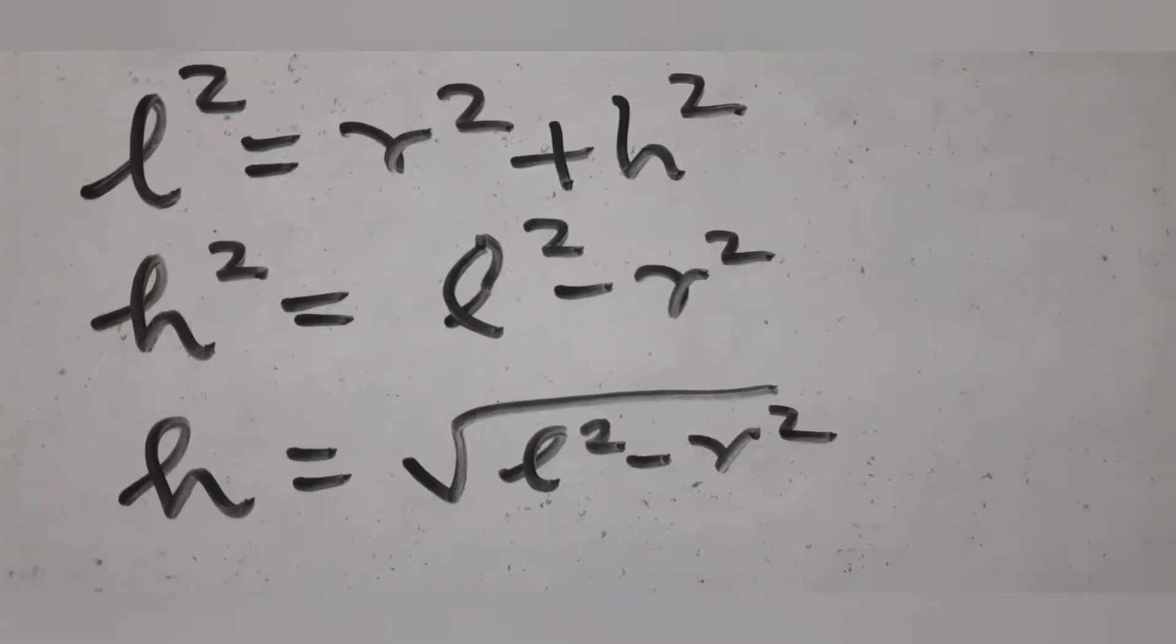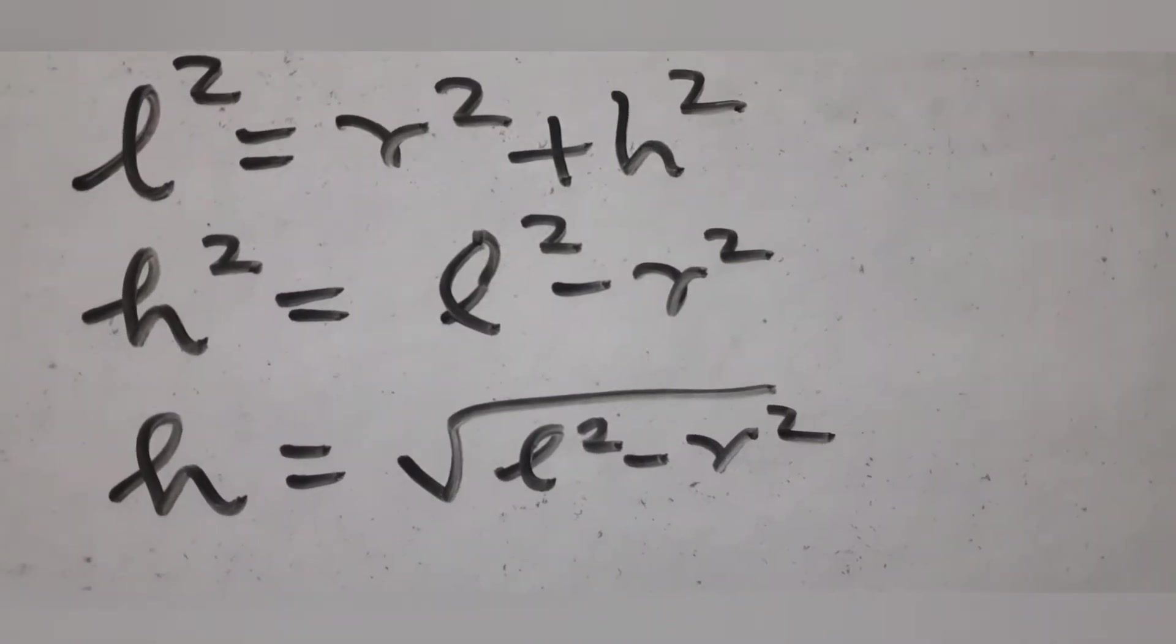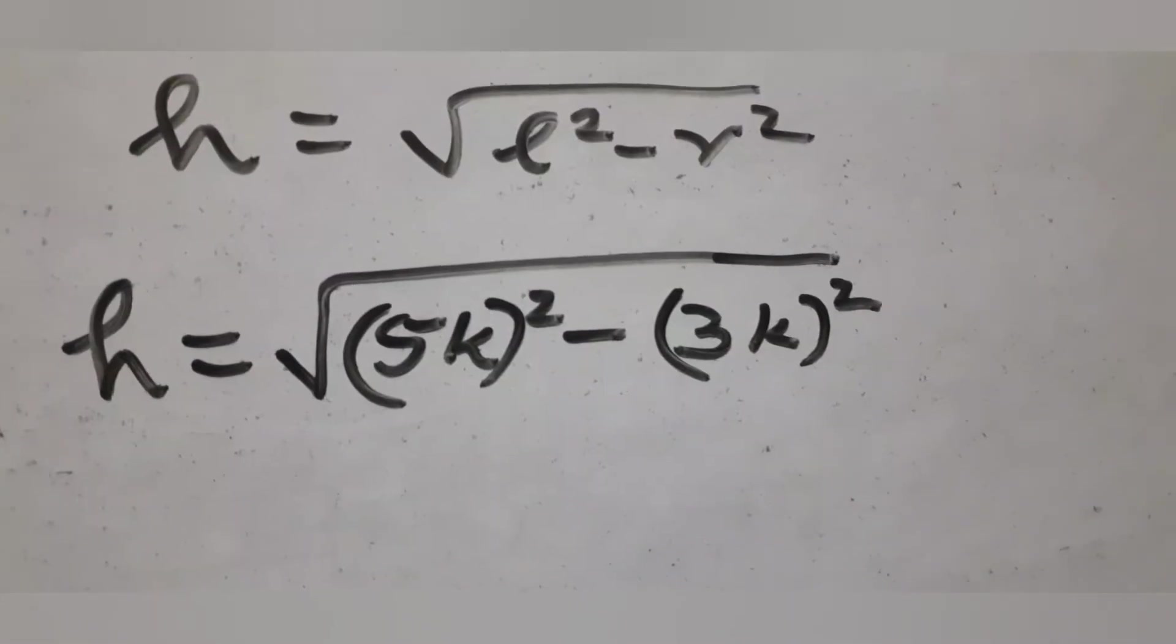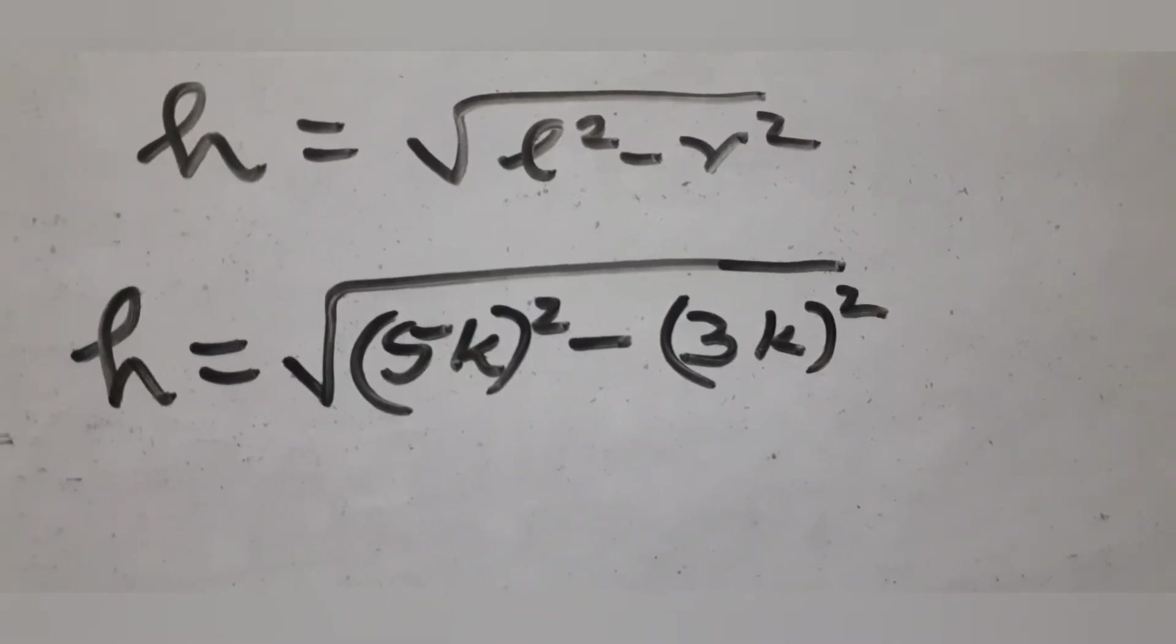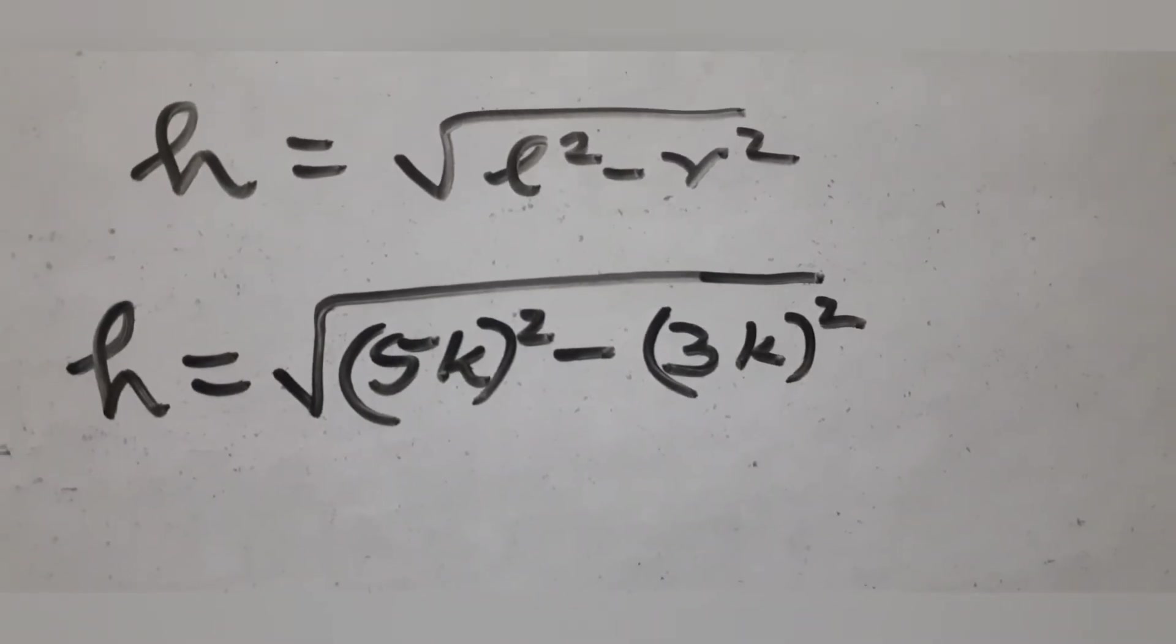To find the volume, we have to find the height of the cone, so use L square equal to R square plus H square, rearrange and find H. So we get H equal to 4k.